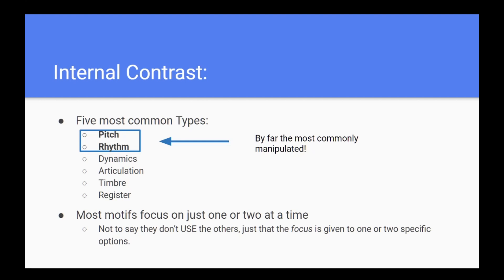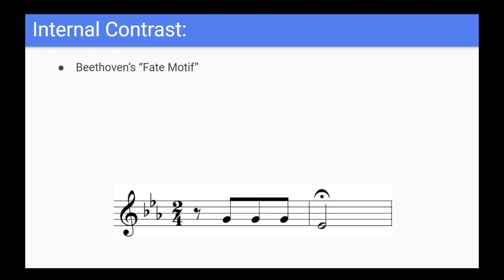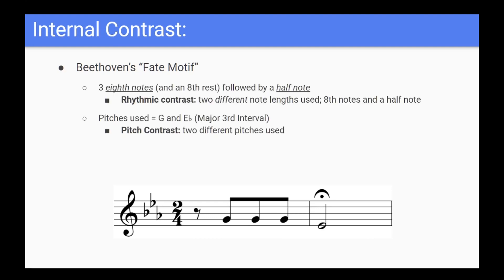For example, let's look at our motifs from earlier. First, Beethoven's famous fate motif. It consists of three eighth notes followed by a half note, a major third lower. This is a very simple motif that focuses on the internal contrast of pitch and rhythm. We have two different pitches being used and two different rhythmic values. It's as simple as that. It's nothing fancy, and yet it forms the cornerstone of arguably one of the most recognizable melodies ever written.